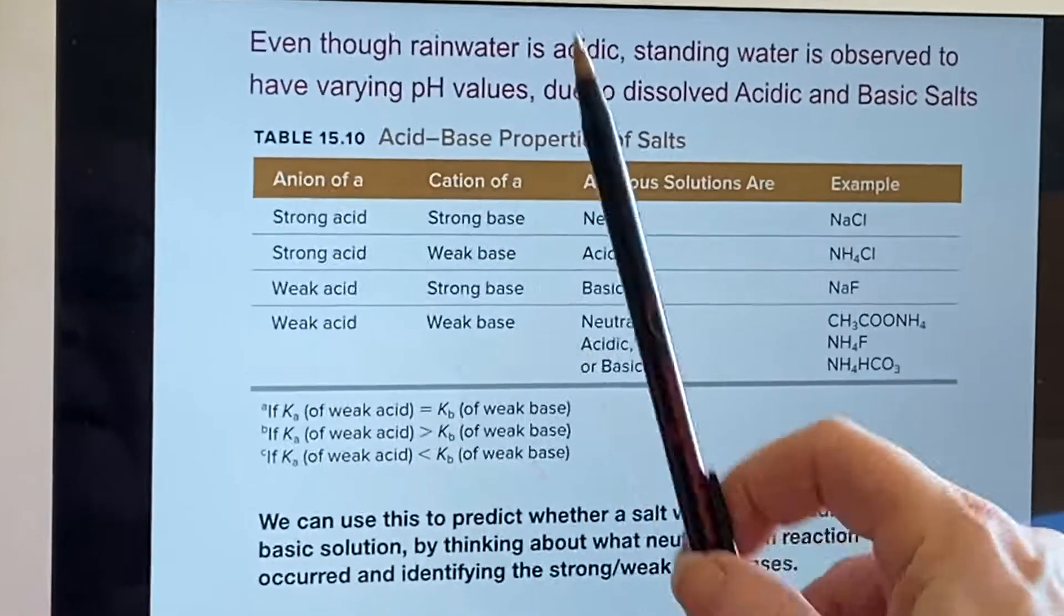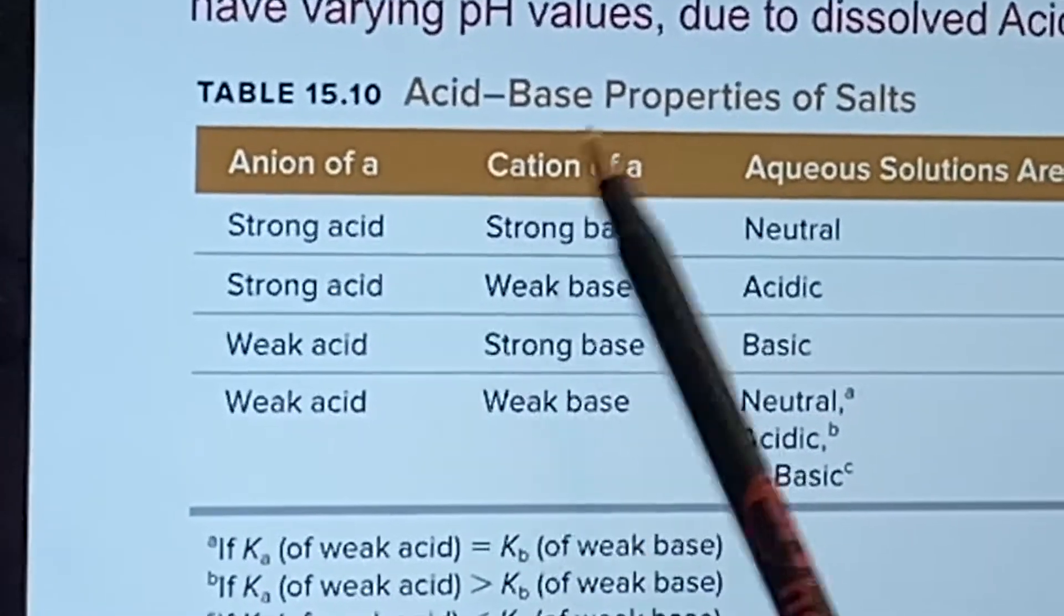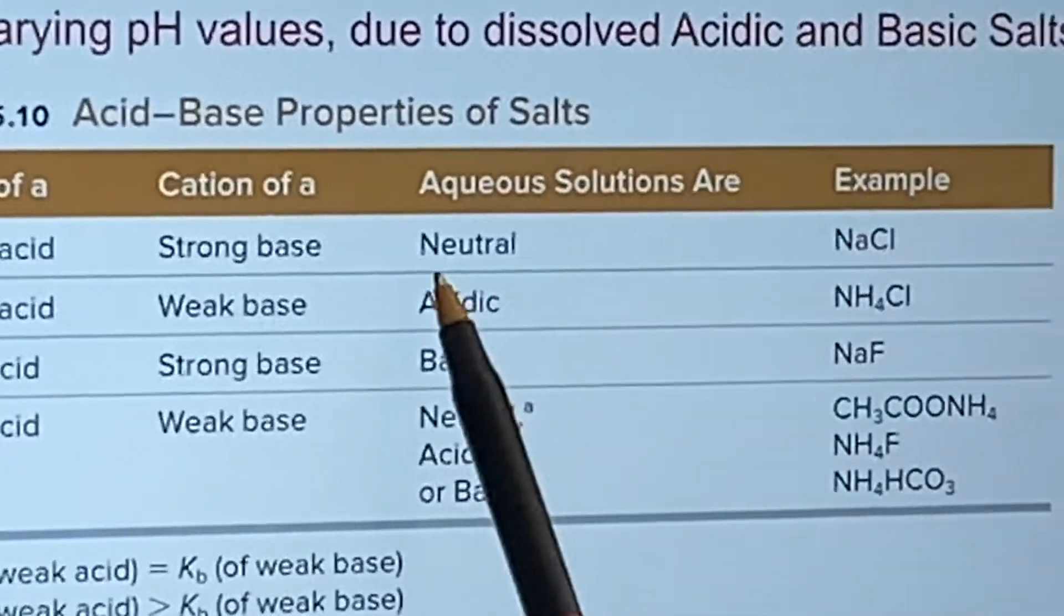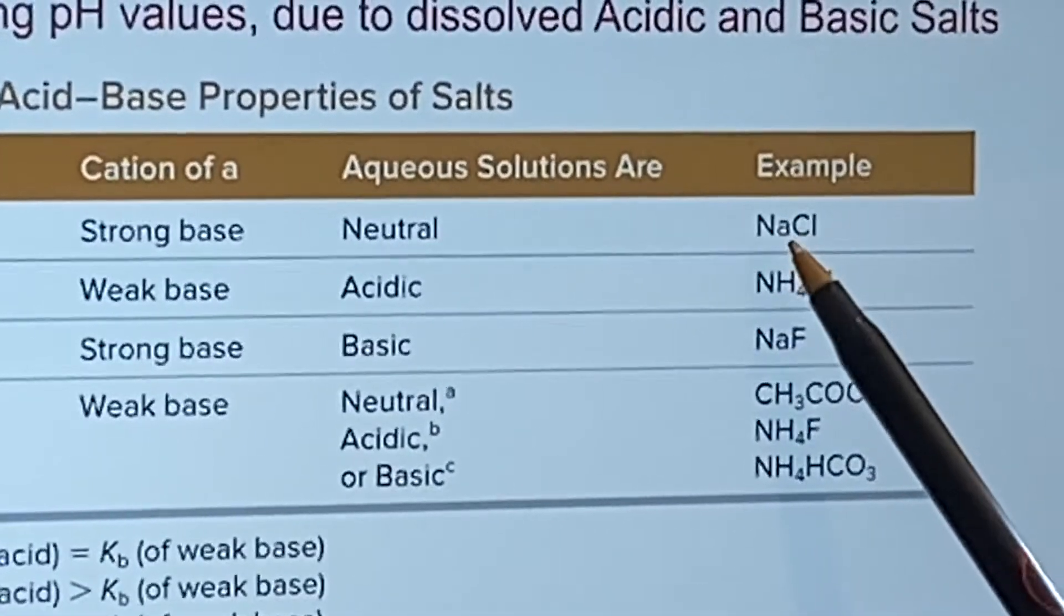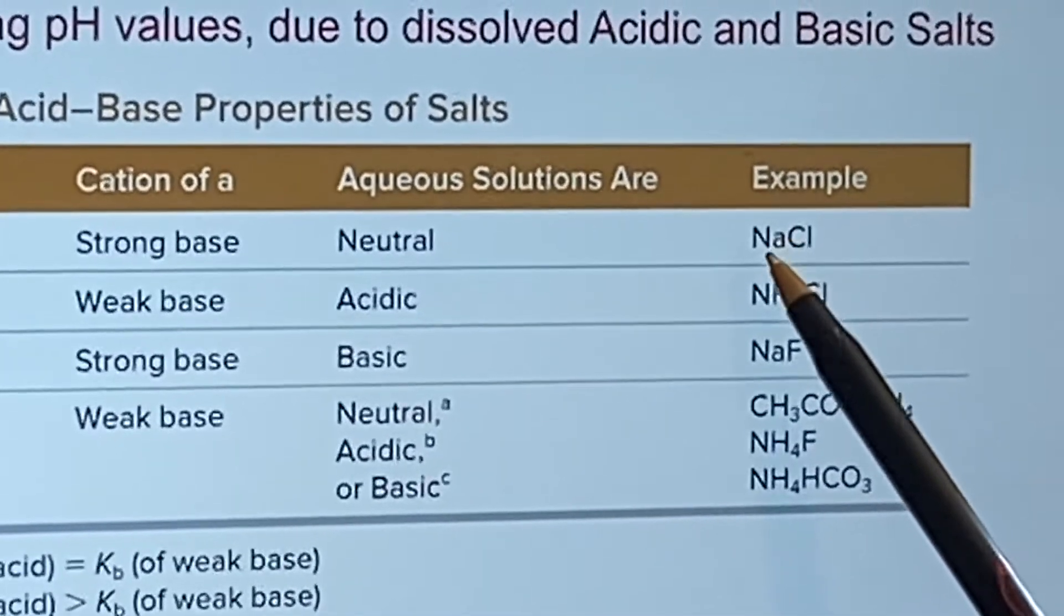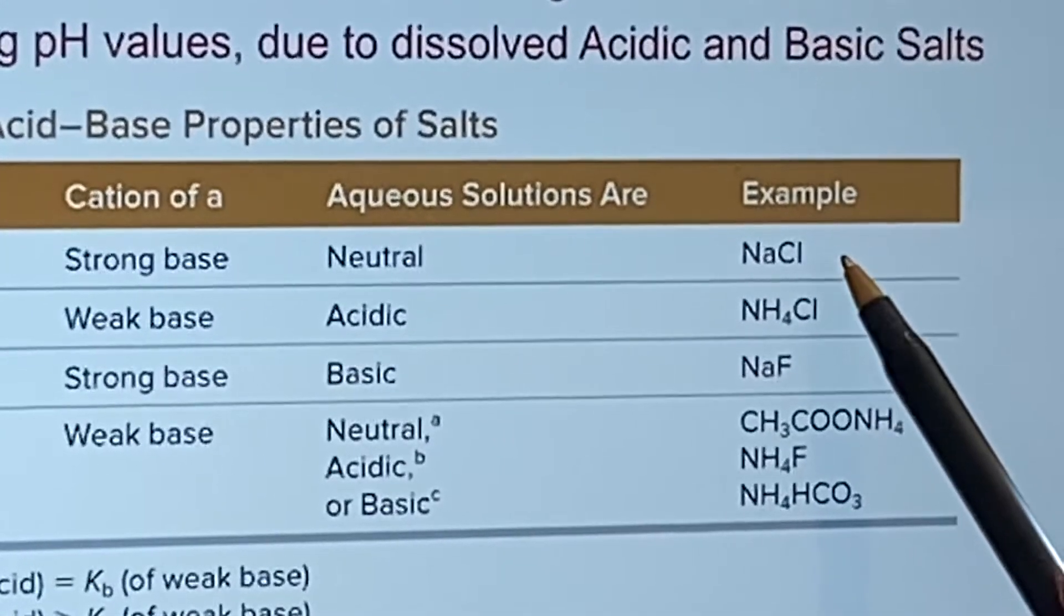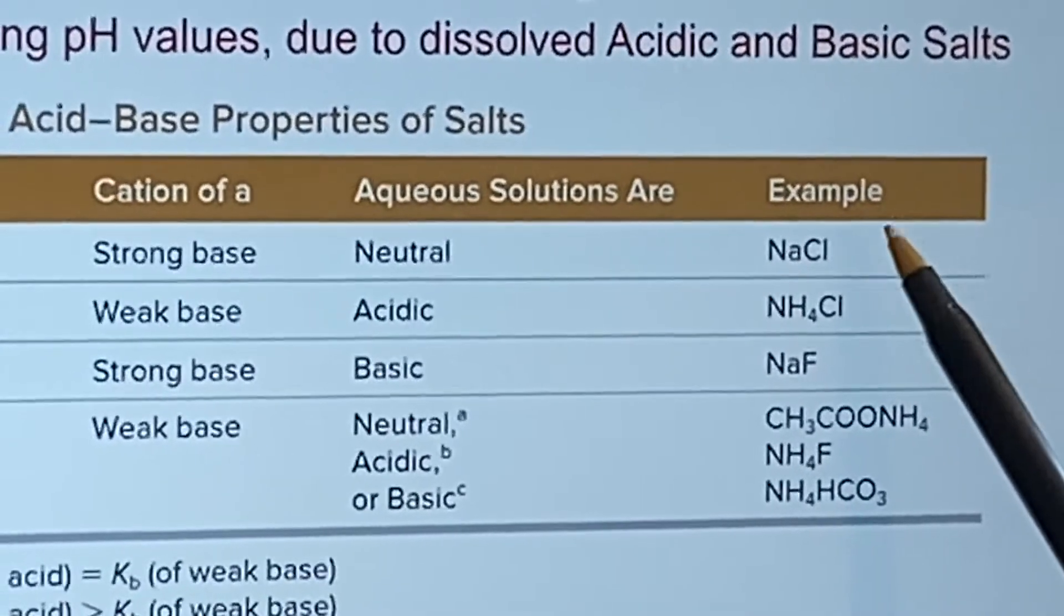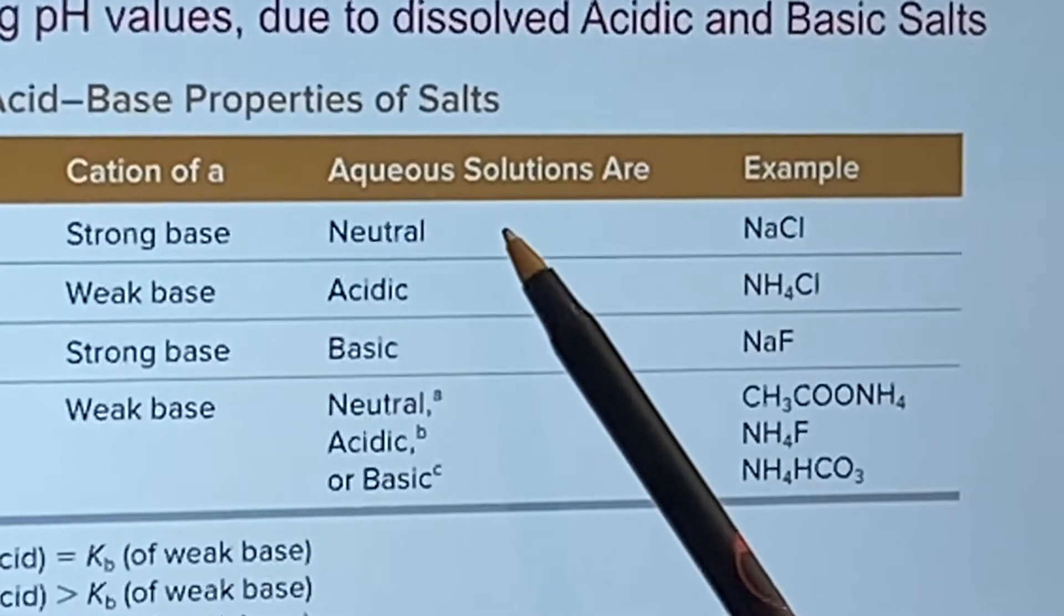If you have the anion that came from a strong acid and the cation that came from a strong base, the aqueous solution would be neutral. An example is sodium chloride, because this comes from sodium hydroxide, which is a strong base. Your cation came from a strong base and the Cl would come from HCl hydrochloric acid, which is a strong acid. So if you just dissolve plain old table salt in water, you would expect it to be a neutral solution.